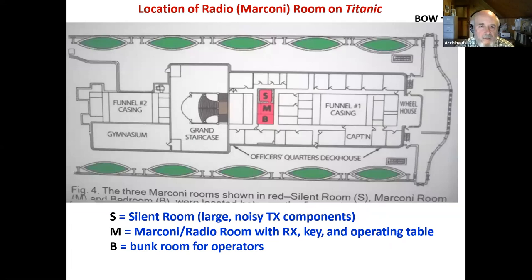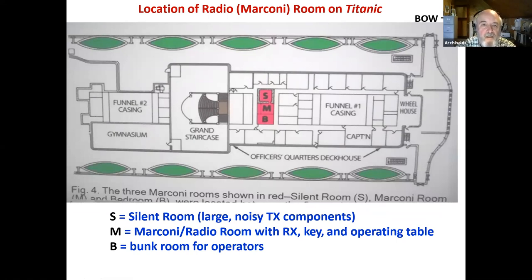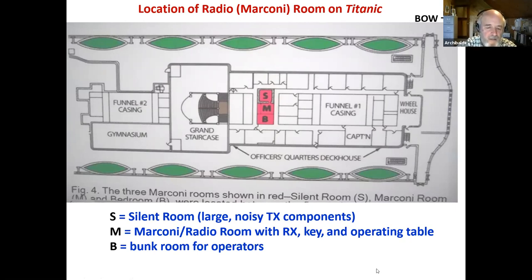This is an eagle's eye view — or more likely a seagull's eye view — of the top deck of the Titanic. The bow is on the right, stern on the left. The three raspberry-colored boxes are the radio installation. The S is what was called the silent room, which had all the heavy machinery for the transmitter. M was the Marconi room, or operating room, with the desk and the receiver where the operator sat. And B was the bunk room — it was a hot bunking system. There were two operators and one bed, but since somebody had to be on duty all the time, it worked out.